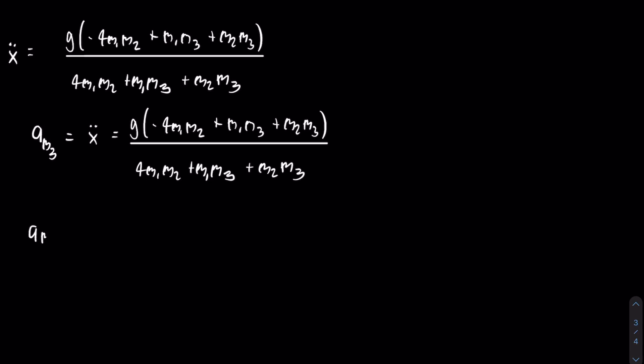And next is the acceleration of mass two, which is equal to x double dot minus y double dot. x double dot is right above and y double dot is somewhere a little bit higher. You could rewind if you really want to see it. But basically, I just subtracted the two and then simplified it. And here is the end result.